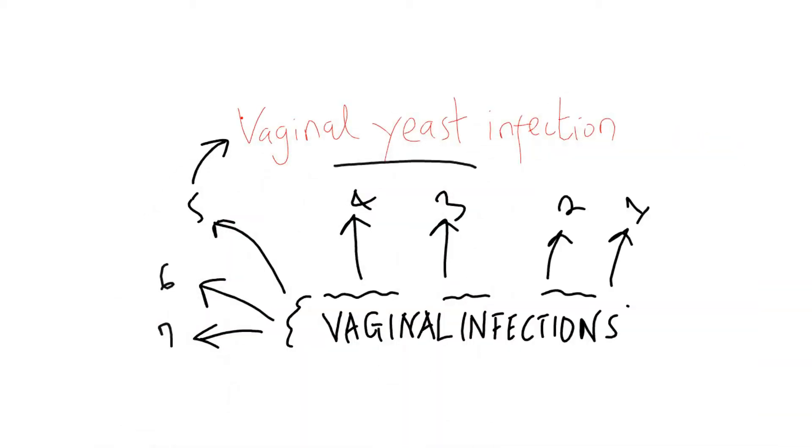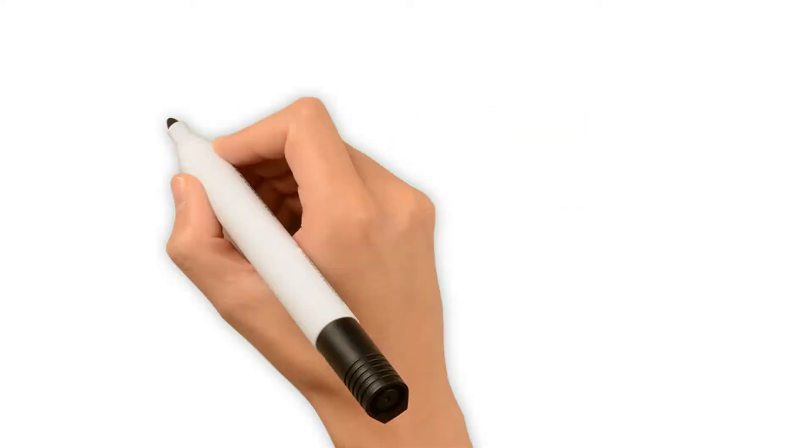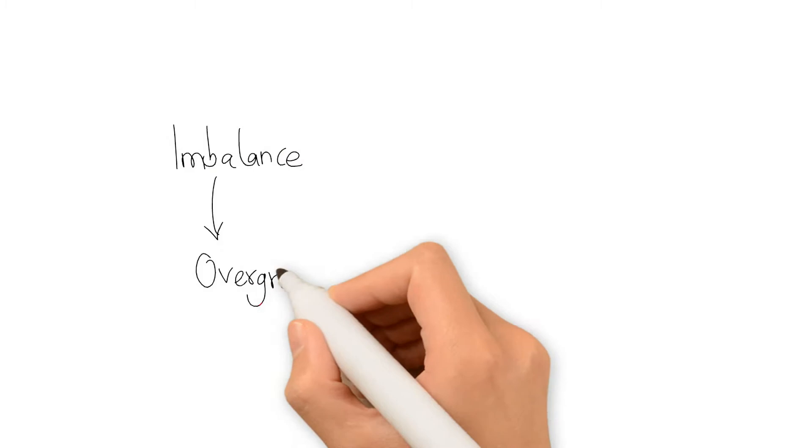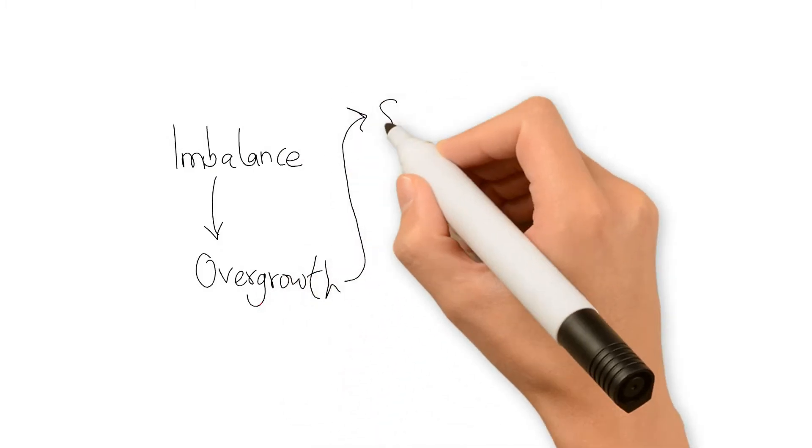Simply put, it is a type of vaginal infection caused by yeast. It usually occurs when there is an imbalance in your body. This imbalance then causes an overgrowth of yeast cells.